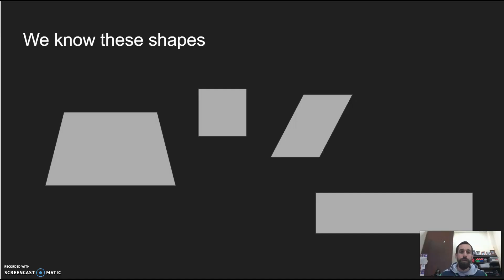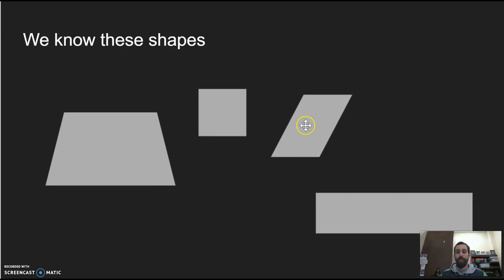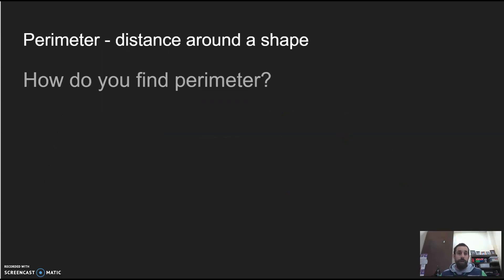So we know these shapes — there are four different shapes here that we should already know. We talked about this one over here on the left yesterday, and we should know these two from elementary, and this one we talked about last week. This one is called a square, this one is called a rectangle. These two are the hard ones — remember, this one looks like a square that got slapped — it is called a parallelogram. And this last one is a trapezoid. Remember these names: trapezoid, square, parallelogram, rectangle.